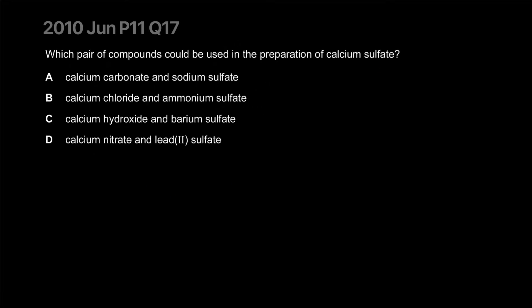Which pair of compounds could be used in the preparation of calcium sulfate? Calcium carbonate is insoluble so that won't work. Calcium chloride and ammonium sulfate - both are soluble so this could work, B is our most likely answer. Barium sulfate is insoluble, this is your precipitate. Lead sulfate is not soluble. Correct answer is B.